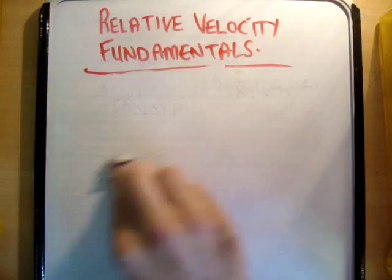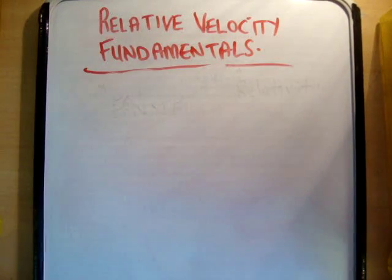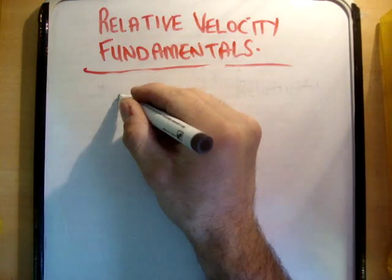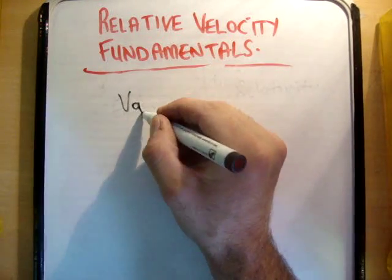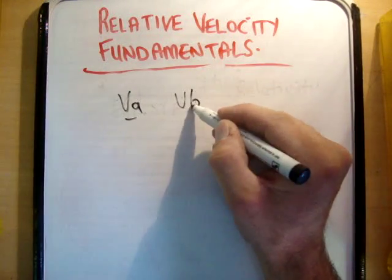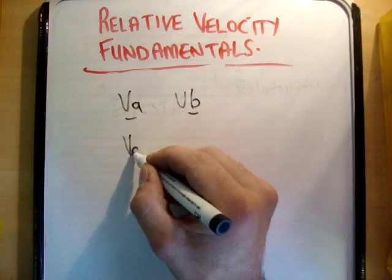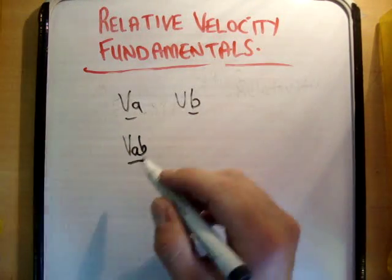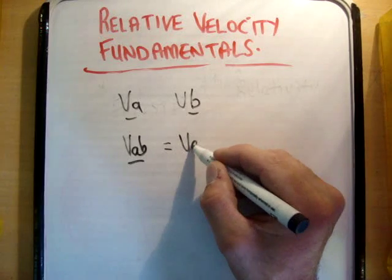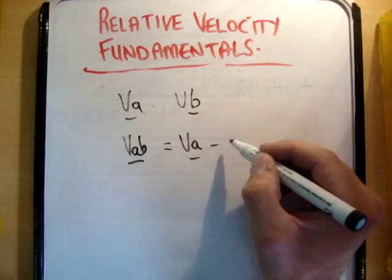So, how does this work out for us? I am going to define the following. If I have two velocity vectors, the velocity vector A and the velocity vector B, if I want to find out the velocity of A relative to B, so I write this, then VAB is equal to VA minus VB.